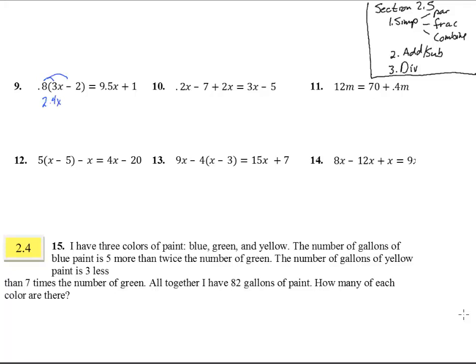2.4x minus 1.6 equals 9.5x plus 1. We don't have any fractions to worry about. We could get rid of these decimals if we wanted to. Times everything by 10 and that would get rid of the decimals. I'm going to forego that and just combine terms right now. Let's subtract this 2.4x to get the x's together. Do that on both sides. We have negative 1.6 equals 7.1x plus 1.